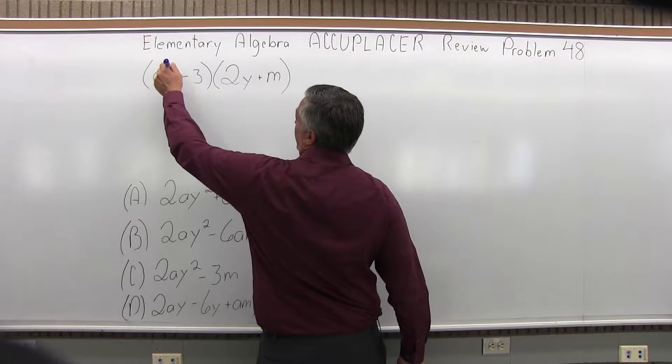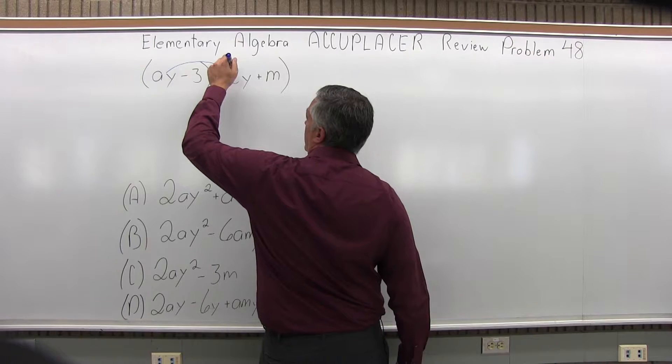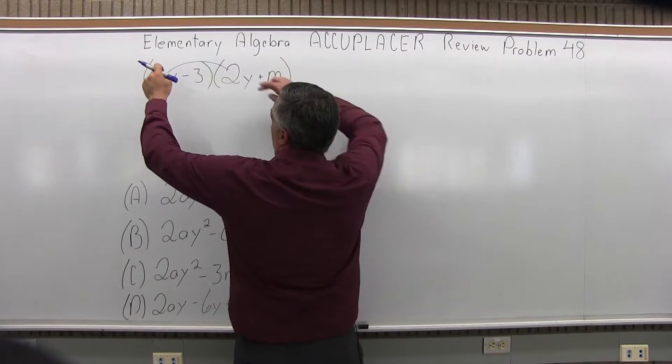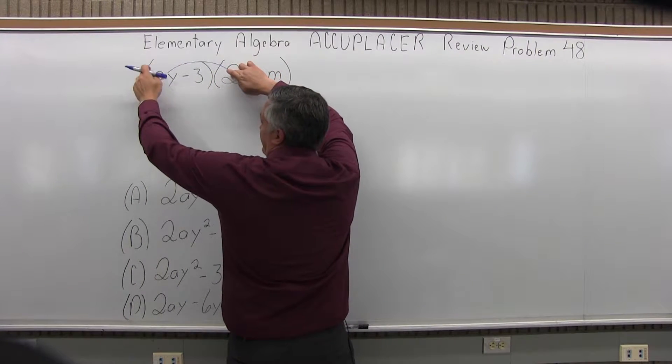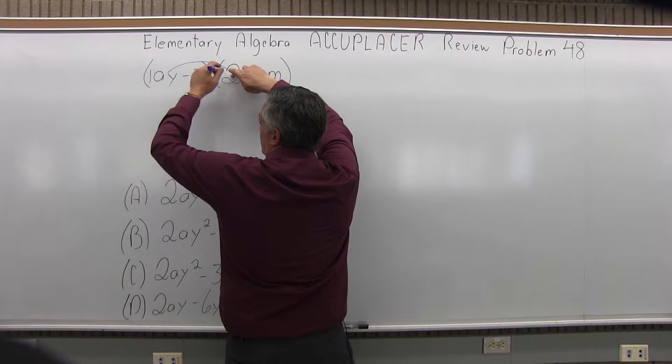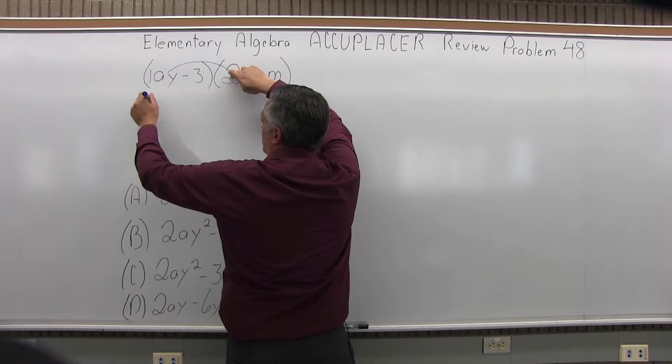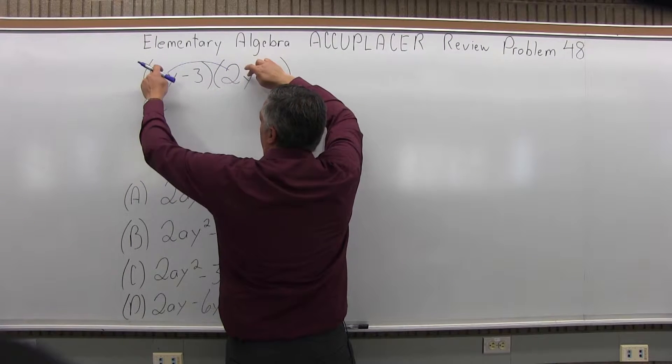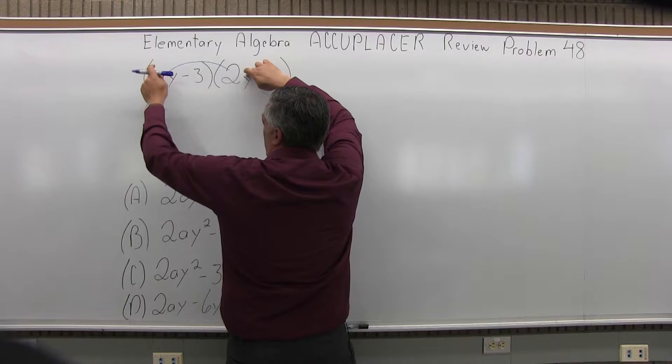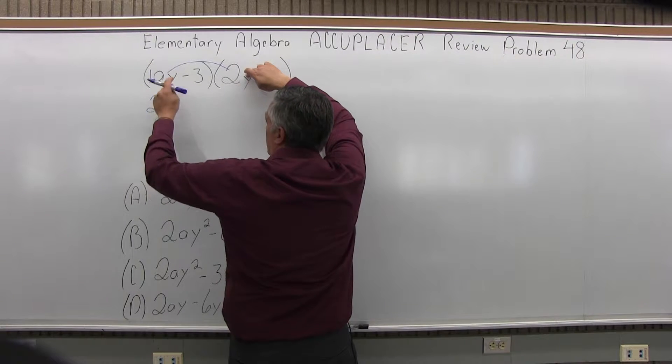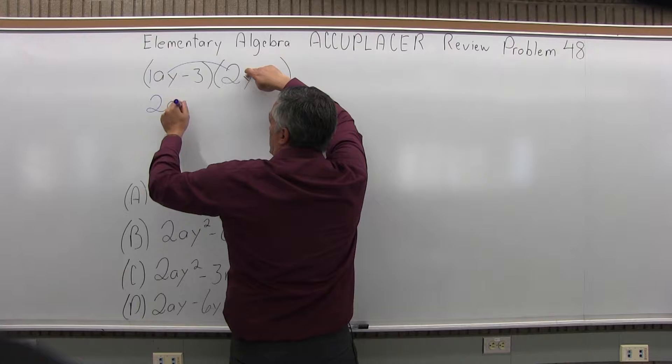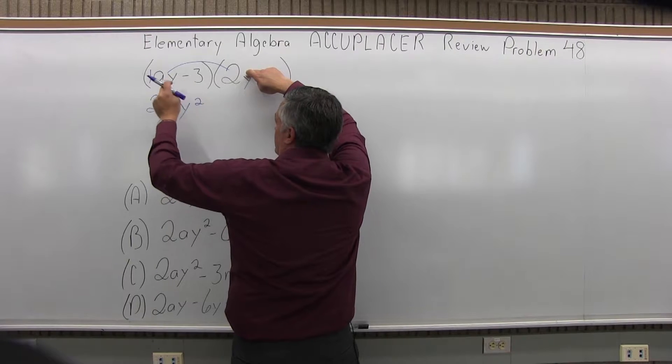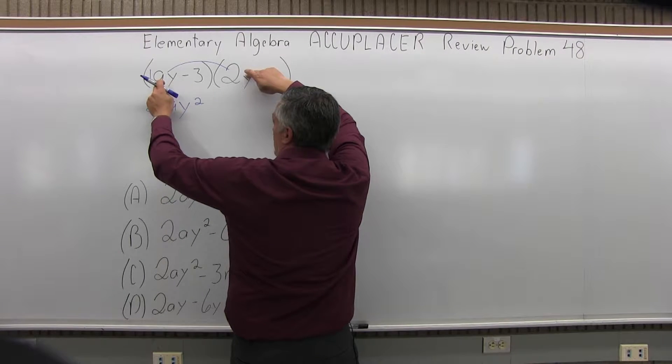I'm going to multiply AY times 2Y. There's no number written in the AY, you can assume it's a 1. So for my numbers, 1 times 2 is 2. A times, there's no A in the 2Y, so the A can stay. But then Y times Y is Y to the second, so that takes care of AY times 2Y.